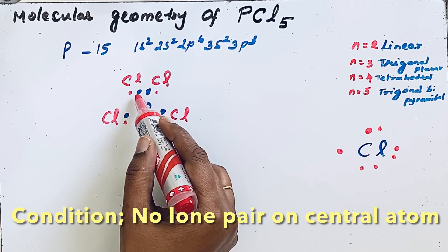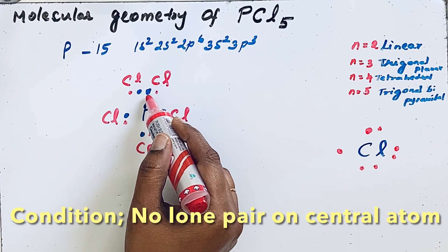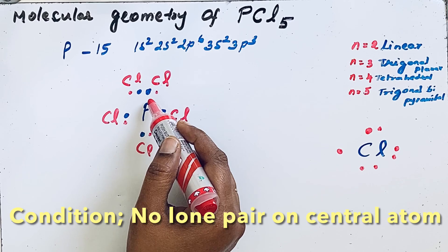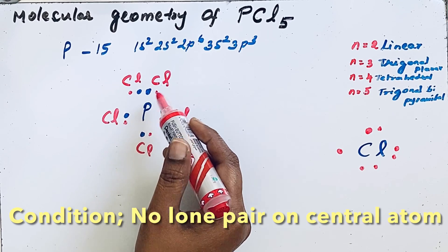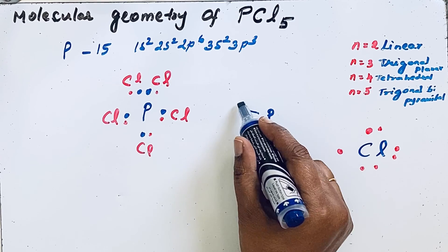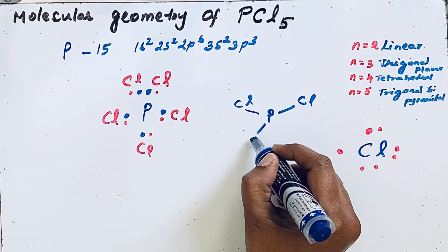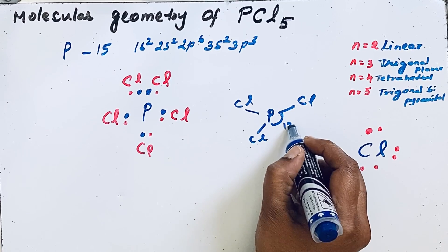These bond pairs repel each other due to negatively charged electrons, so they try to maximize their distance. This gives the molecular geometry of trigonal bipyramidal. The equatorial PCl bonds form with a bond angle of 120 degrees.